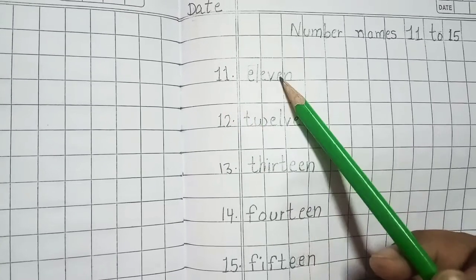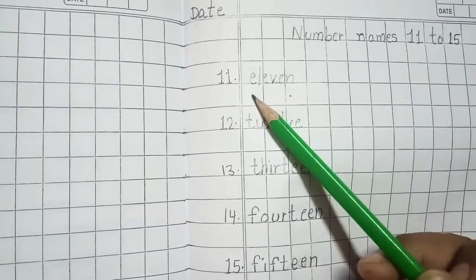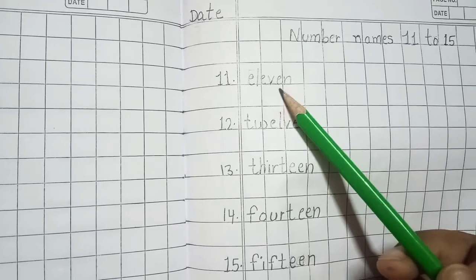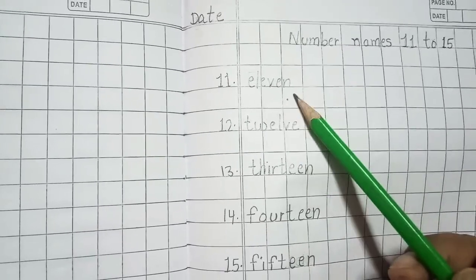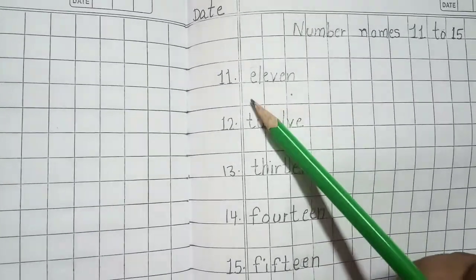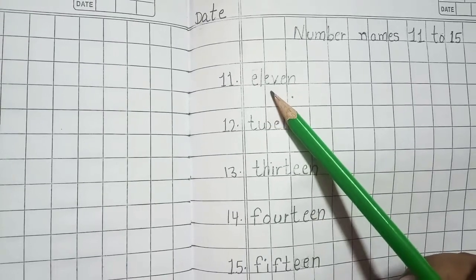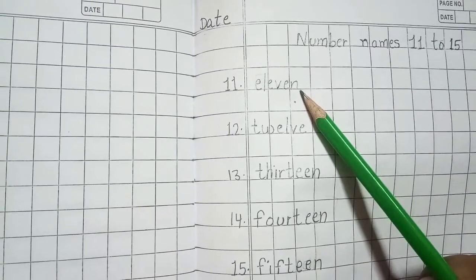It is 11. Spelling of 11 is E L E V E N, 11. Repeat after me. E L E V E N, 11.